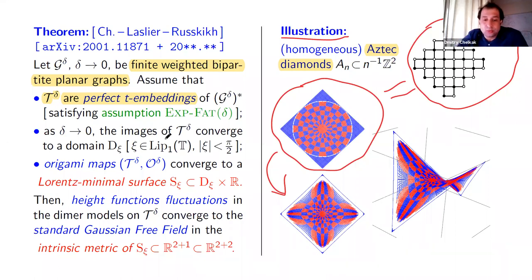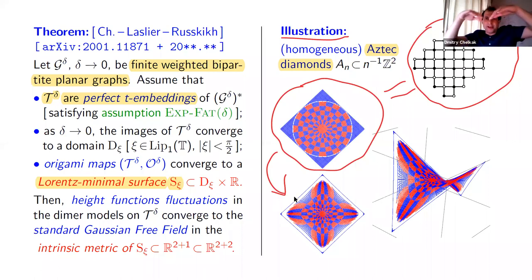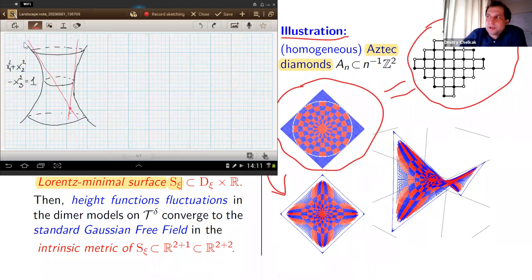The most non-probabilistic object — apparently not related to probability — is those Lorentzian minimal surfaces. In this example, my domain (which I call Dxi) is just the square, and over the square there is the graph of a surface. This is just the hyperboloid — a unit sphere in the Minkowski space, if you wish. This hyperboloid is a ruled surface; given a point, there are two lines passing through it. You can do such a drawing, so this boundary contour is effectively the Aztec surface.